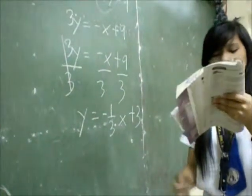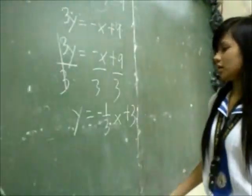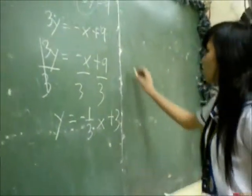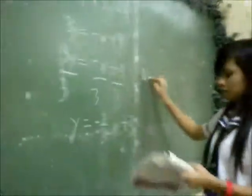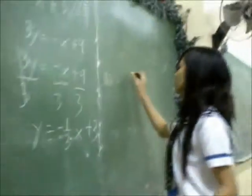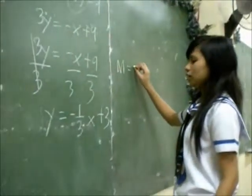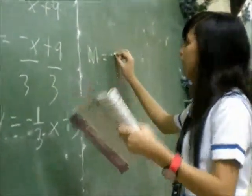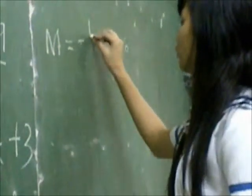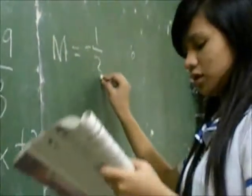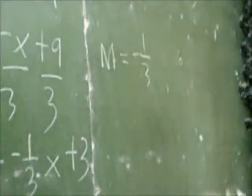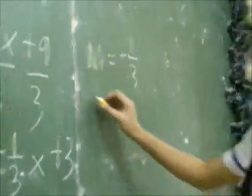So the slope is negative one-third, and the y-intercept is 3.